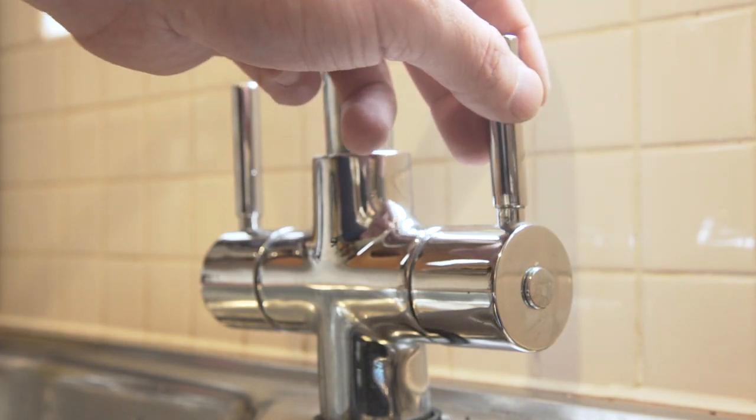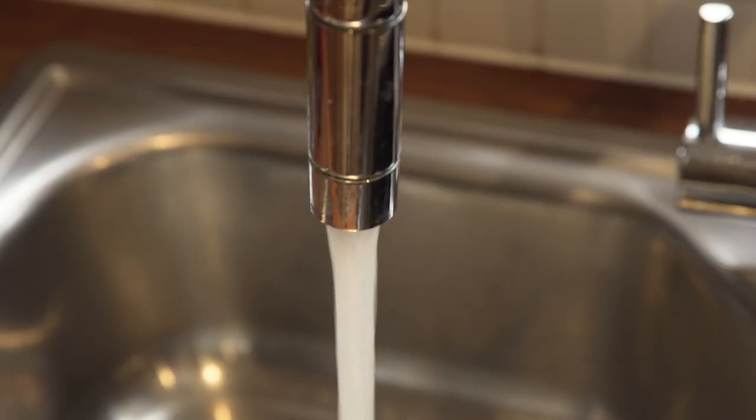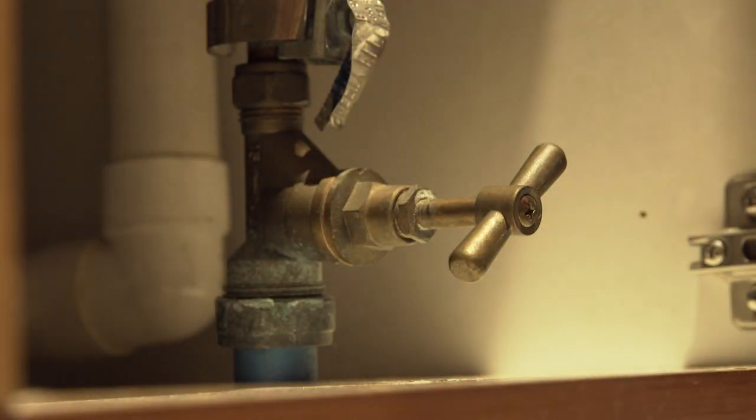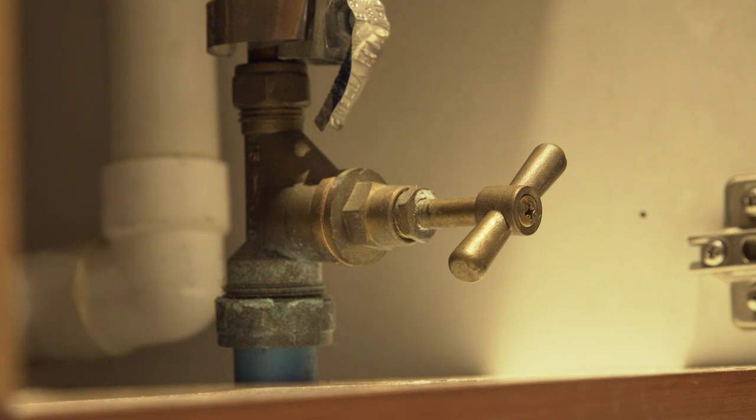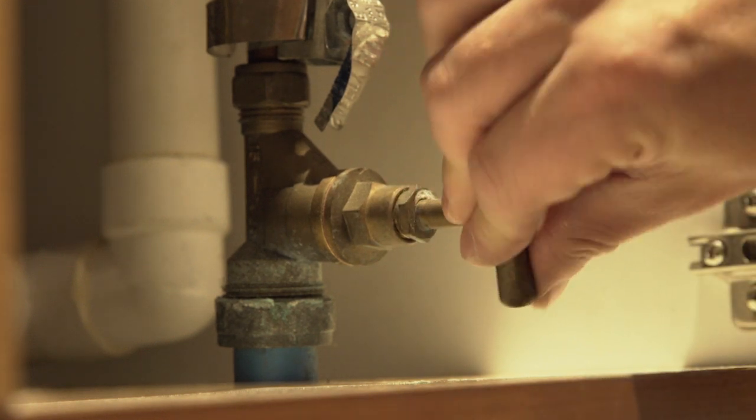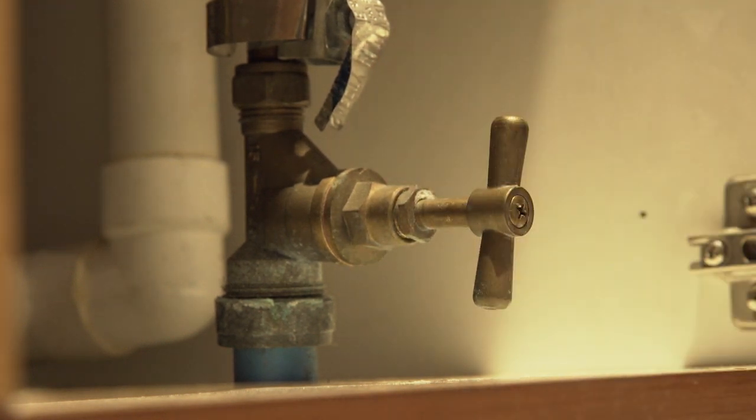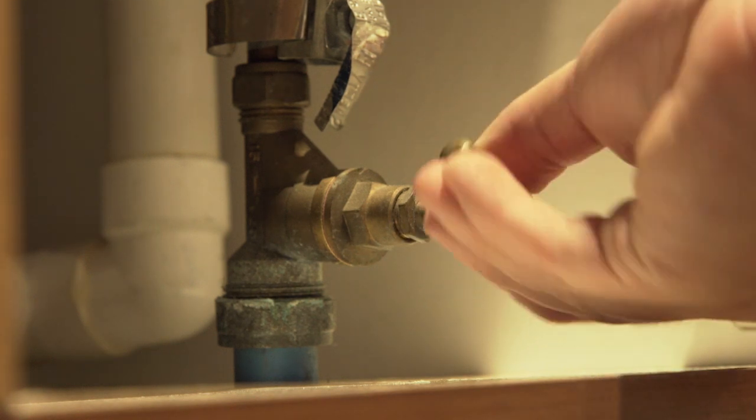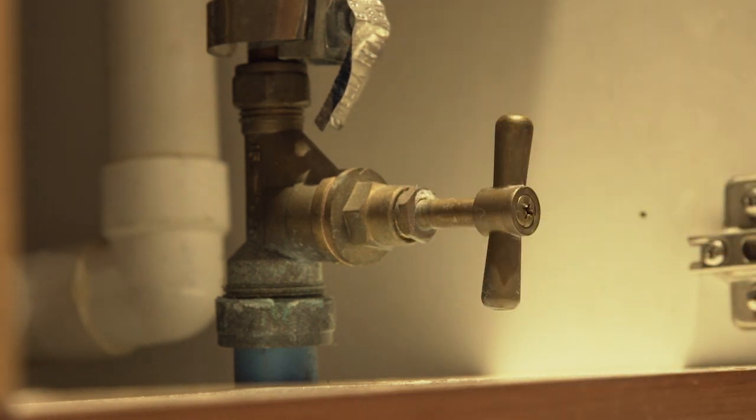To clear the aeration, simply run your cold kitchen tap. While the tap is running, slowly turn your inside stop tap off and on again. Your stop tap is located where your water supply enters your property. This is typically under your kitchen sink but it could be in a downstairs toilet or in your garage. By slowly opening and closing the stop tap a couple of times, you'll release any trapped air in the internal plumbing.